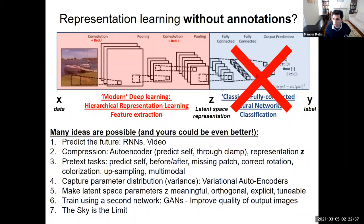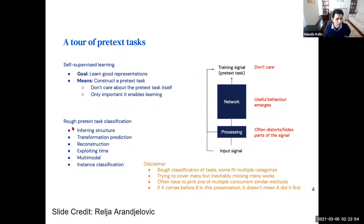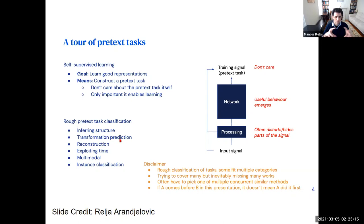The goal is to learn good representations; the means is to construct a pretext task you don't really care about that enables learning. You can get so much more training data than if you restrict yourself to places where people have actually labeled it — there are only millions of labeled examples, but billions and trillions of unlabeled ones. Some pretext tasks involve inferring the structure of an image: break it into patches and learn where the different patches go, which takes an enormous amount of conceptualization.